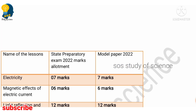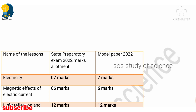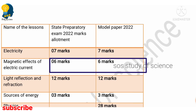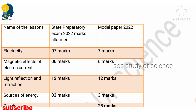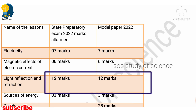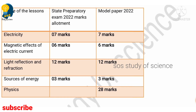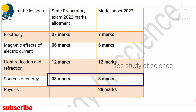Now let us move to the physics part. The first lesson is Electricity — both in the model question paper and state preparatory examination question paper, seven marks has been allotted, so you will get seven marks in the board examination. Moving to Magnetic Effect of Electricity — six marks has been allotted in both question papers. The high-weightage lesson is Light Reflection and Refraction — for this lesson, 12 marks has been allotted in both papers. By reading only this particular lesson, you will get 12 marks, so focus more on this lesson. Moving to Sources of Energy — three marks has been allotted in both the model paper and the state preparatory paper.